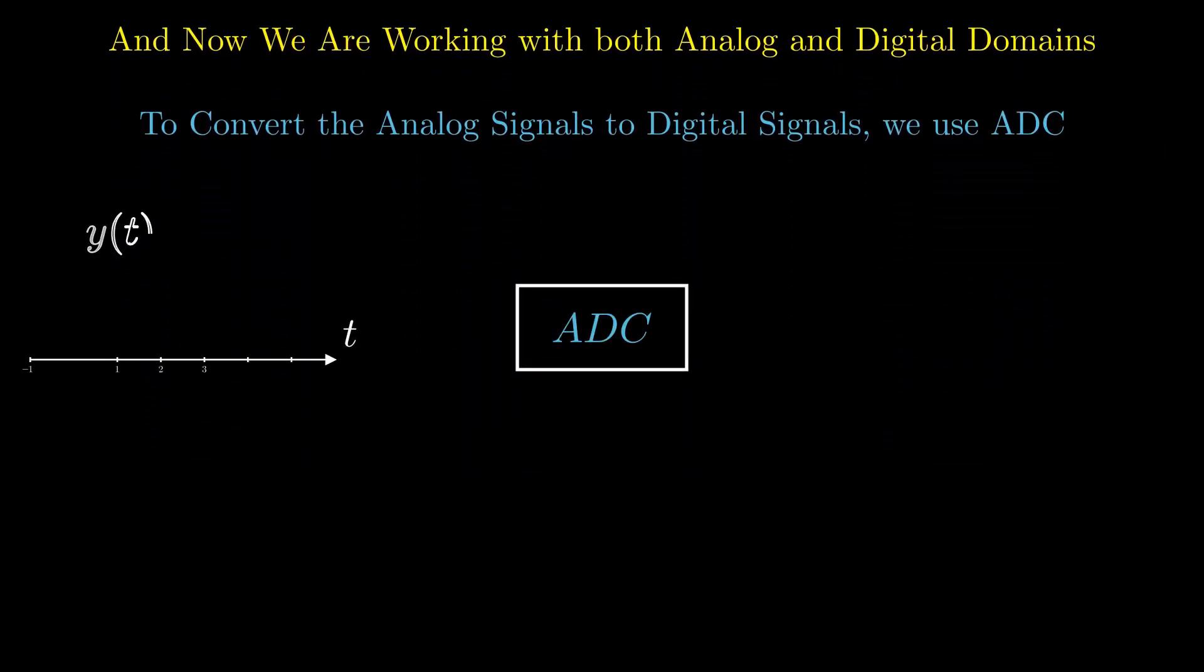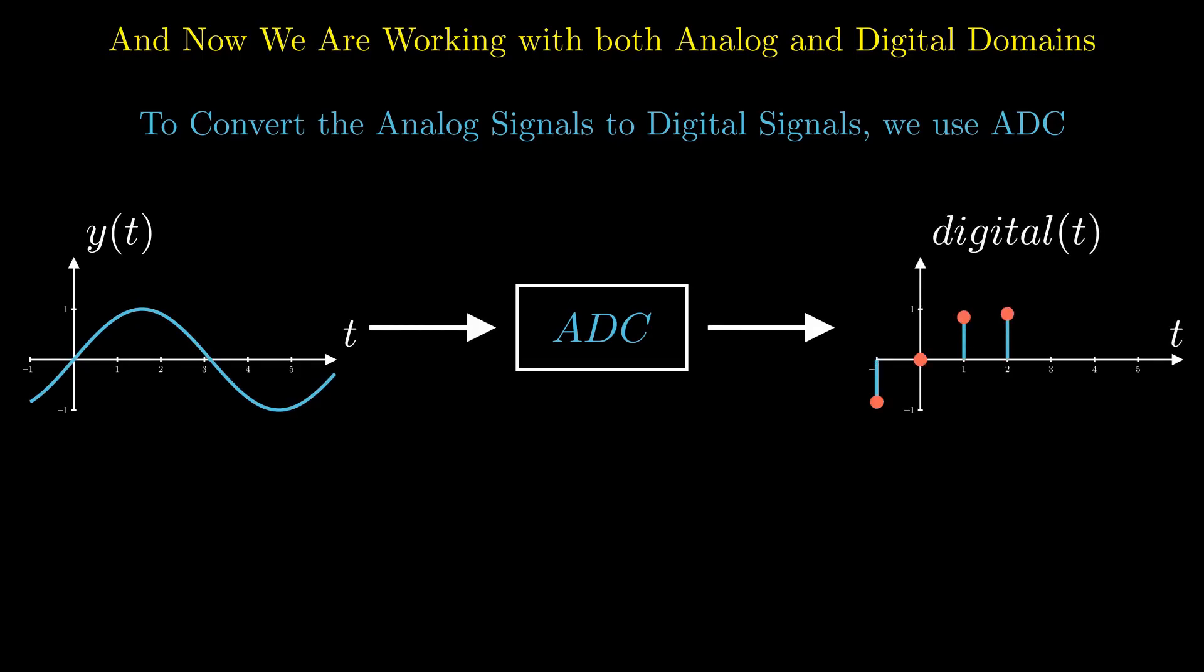To convert analog signals to digital signals, we use analog to digital converters. When a signal is fed into the ADC, it samples the signal at regular intervals providing a digital signal.